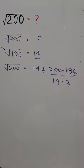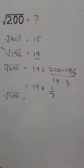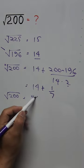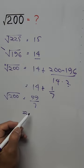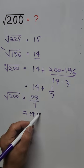Since this is the square root, simplify the right-hand side. So we have the square root of 200 is 99 over 7, or approximately 14.14, our answer.